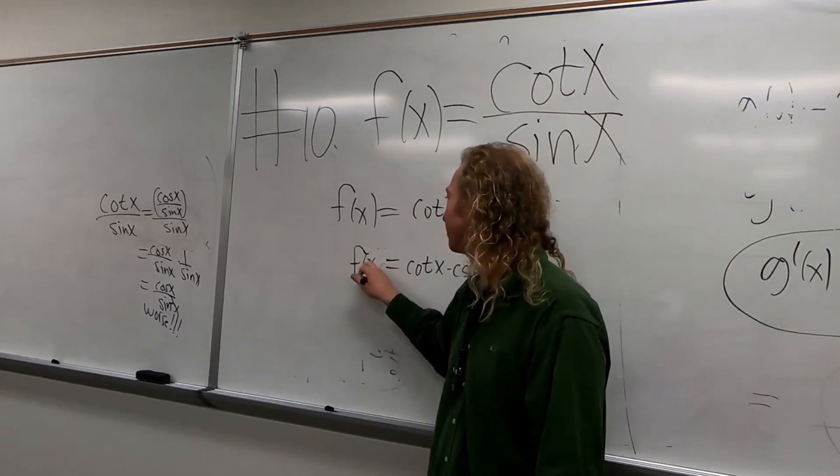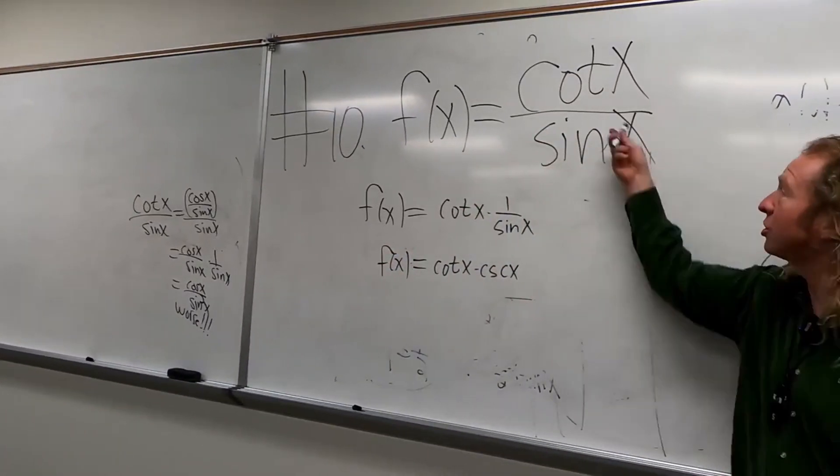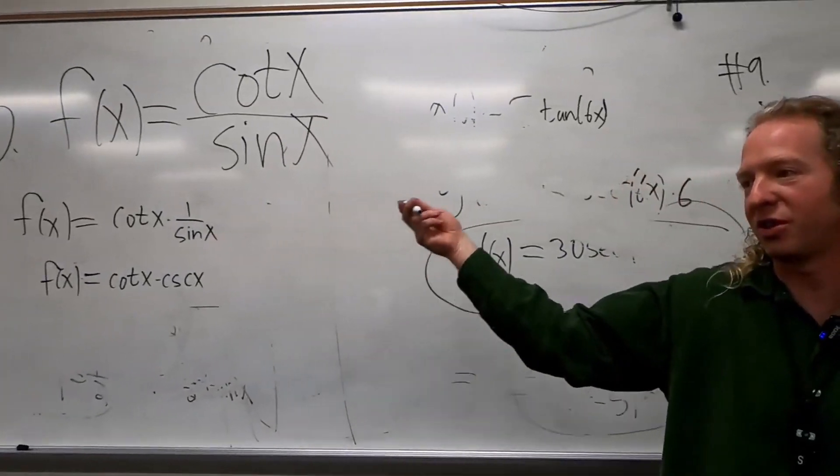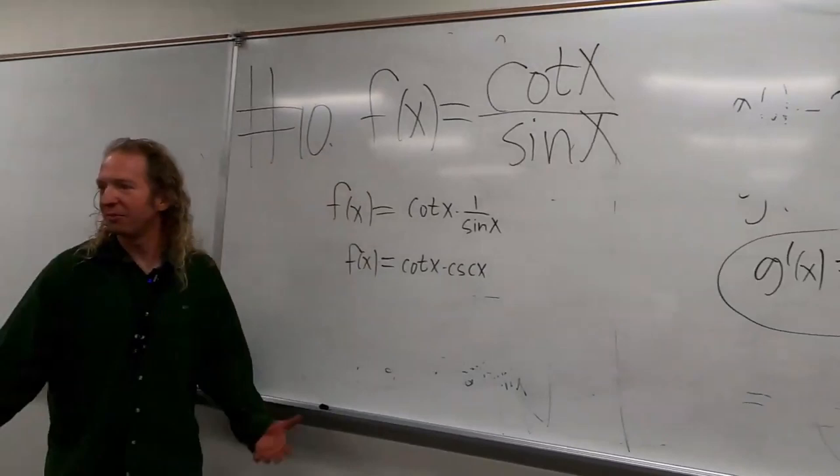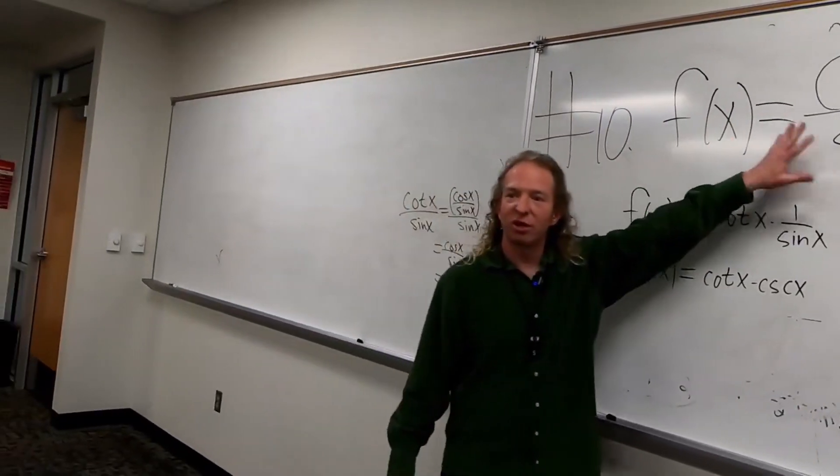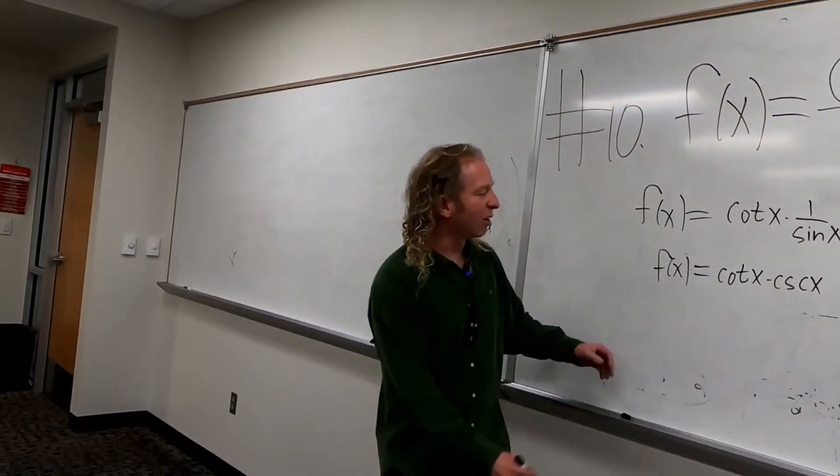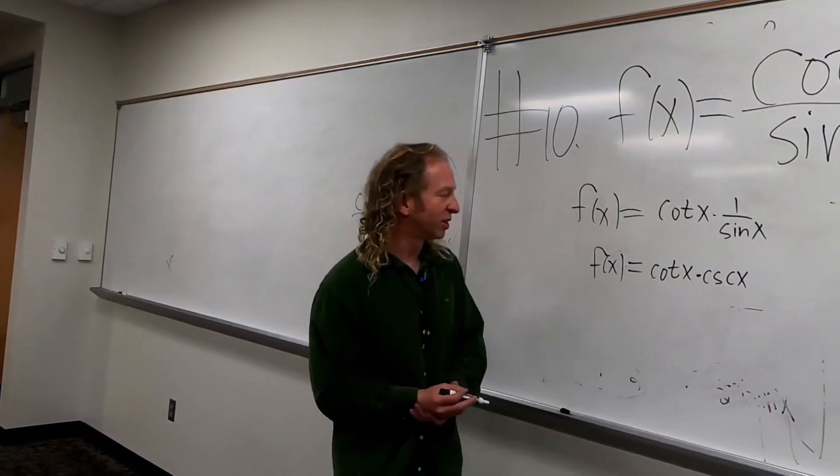So now we can take the derivative of this, right, using the product rule. You could just use the quotient rule as well, right? I was just going to use the quotient rule until Aaron suggested that, since it's a little bit faster. But you could also just use the quotient rule. All right, so now we'll use the product rule, right? So let's do it.